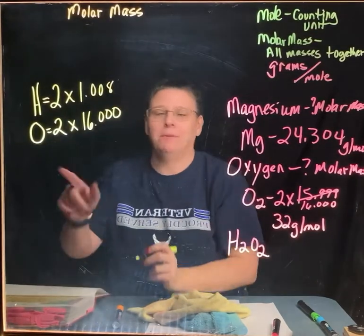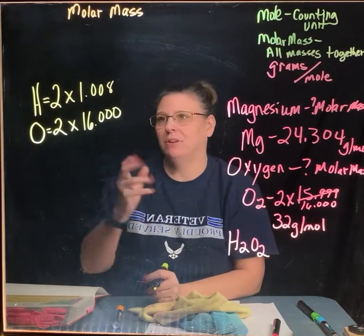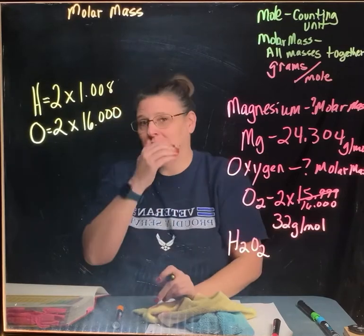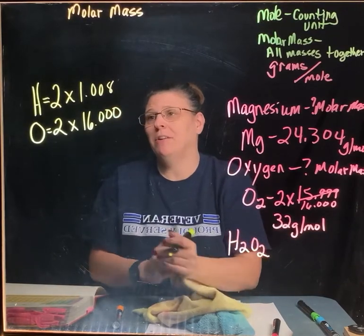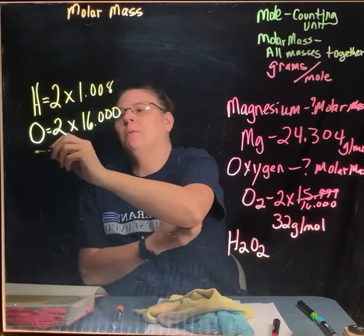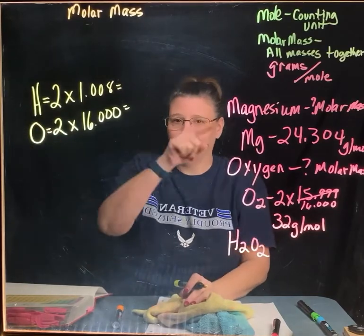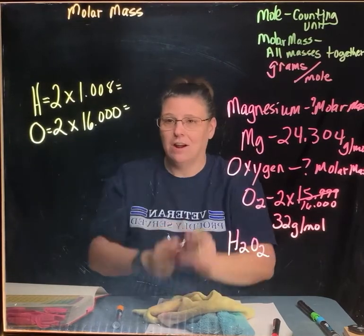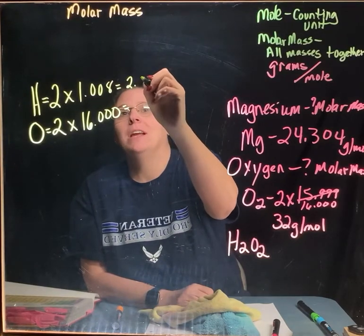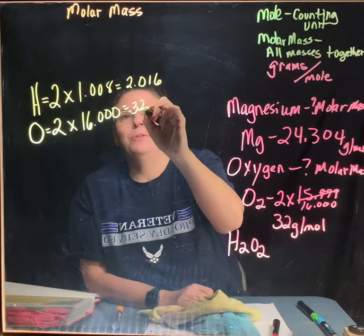Or you can, if you're pre-AP, you have to do 15.99. But on levels, you can just do 16. We never want to put hydrogen as 1. If you're going to round it, it would be 1.01, but leave it alone. So then we multiply across. That's my saying in here. Multiply across and add down. Multiply across, add down.